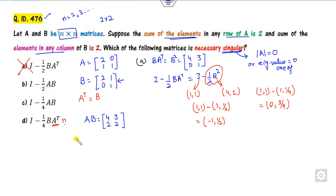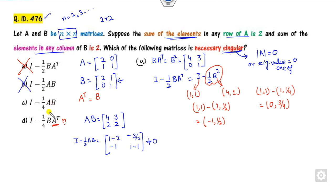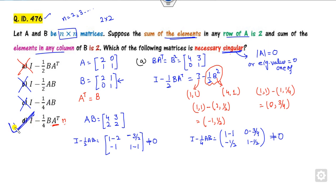I - (1/2)AB gives entries [0, -2; 0, -3/2; 0, 0] — the determinant is non-zero, so it is again non-singular. For I - (1/4)AB, similarly the diagonal gives 1 - 1 = 0 and the determinant is non-zero, so that is also not singular. The only correct answer according to this 2×2 example is the option involving I - (1/4)B·A^T. Always use convenient 2×2 or 3×3 examples to eliminate options.